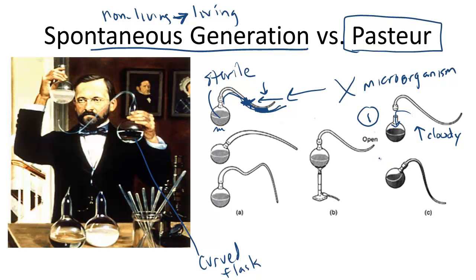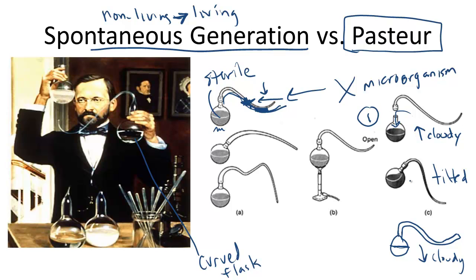He also had another flask where it was just the broth and the flask itself, not exposed to microorganisms. And this did not produce a cloudy mixture. And a third, where the flask was open but he tilted it. When he tilted it, it allowed this dusty mixture of microorganisms that had settled at the bottom to go into the broth. He tilted it back, and there was indeed a cloudy mixture.